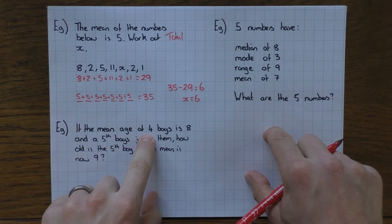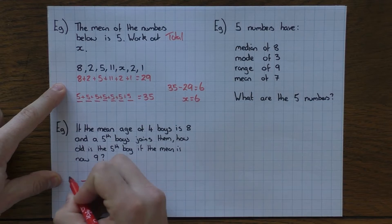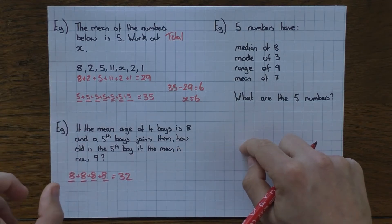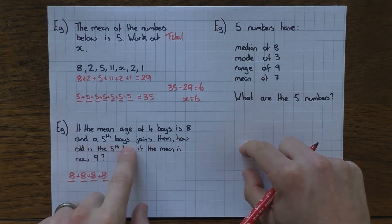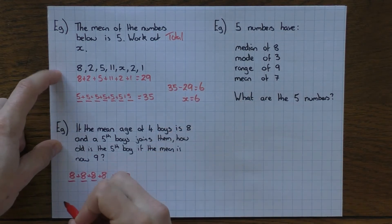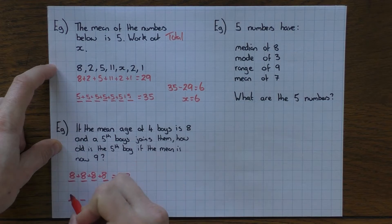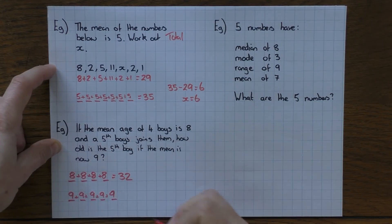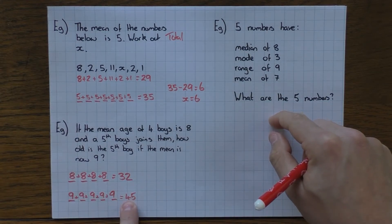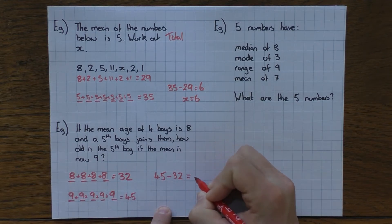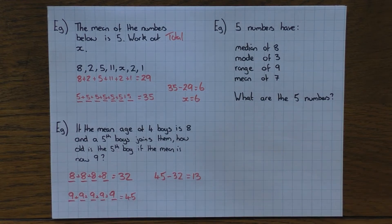Building on that: the mean age of 4 boys is 8 — work out the total. 4 boys, mean is 8, so assume they're all 8: 4 × 8 = 32. A fifth boy joins and the mean is now 9. For 5 boys with mean 9: 5 × 9 = 45. The answer reveals itself: total for 5 boys is 45, total for 4 boys was 32, so 45 − 32 = 13. The fifth boy must be 13 years old.